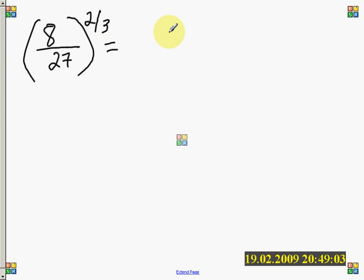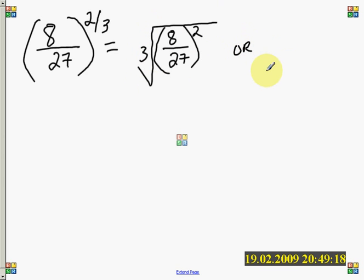I can write that as 8 over 27 squared and take the cubed root of it, or I can write it as the cubed root of 8 over 27, that whole quantity squared.